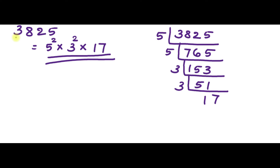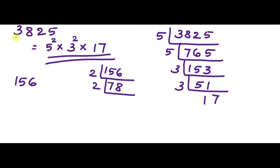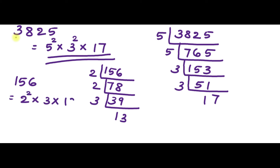Third question: express 156 as the product of its prime factors. 156 is divisible by 2, giving 78. 78 divided by 2 is 39. 39 is divisible by 3, giving 13. So 156 = 2² × 3 × 13.